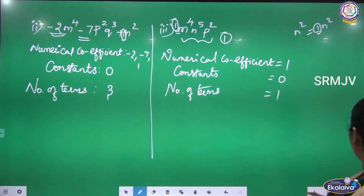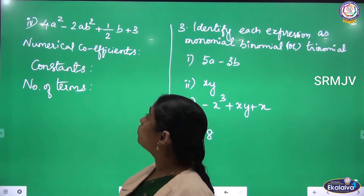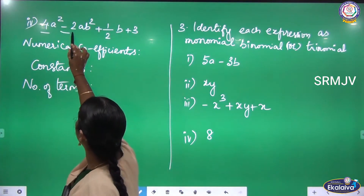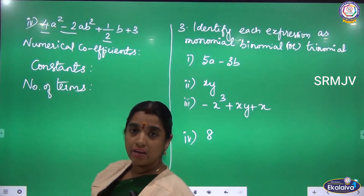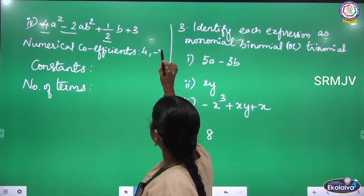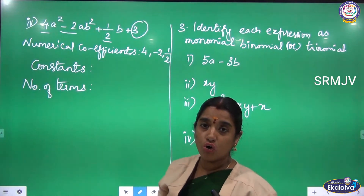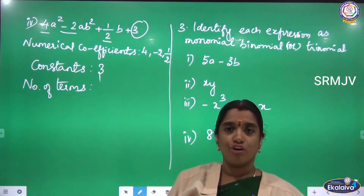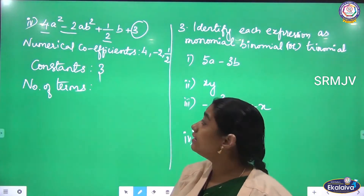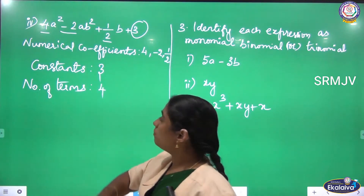Now moving to the next: 4a² - 2ab² + ½b + 3. The numerical coefficients with the variables are 4, -2, and ½. The constant is 3 — it is a standalone numerical value with no variable. The number of terms: 4a² is the first term, -2ab² is the second, ½b is the third, and 3 is the fourth term — so 4 terms total.